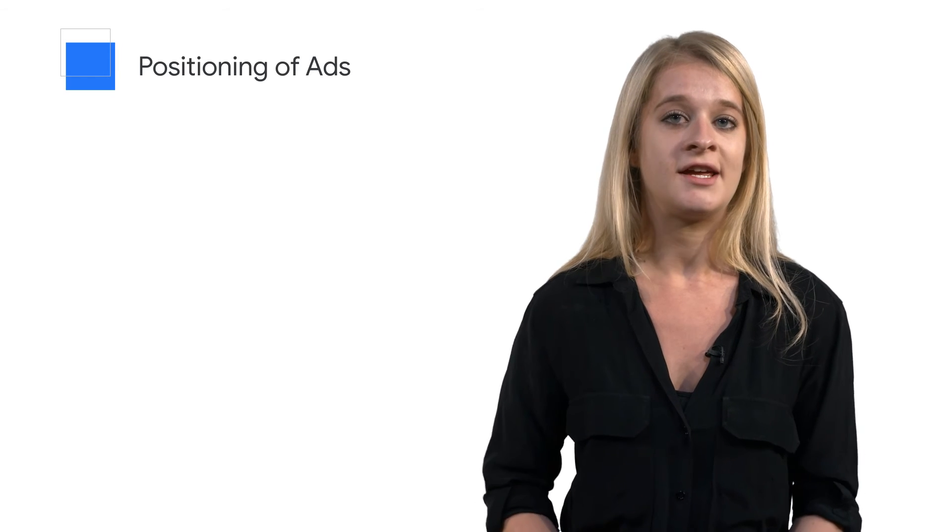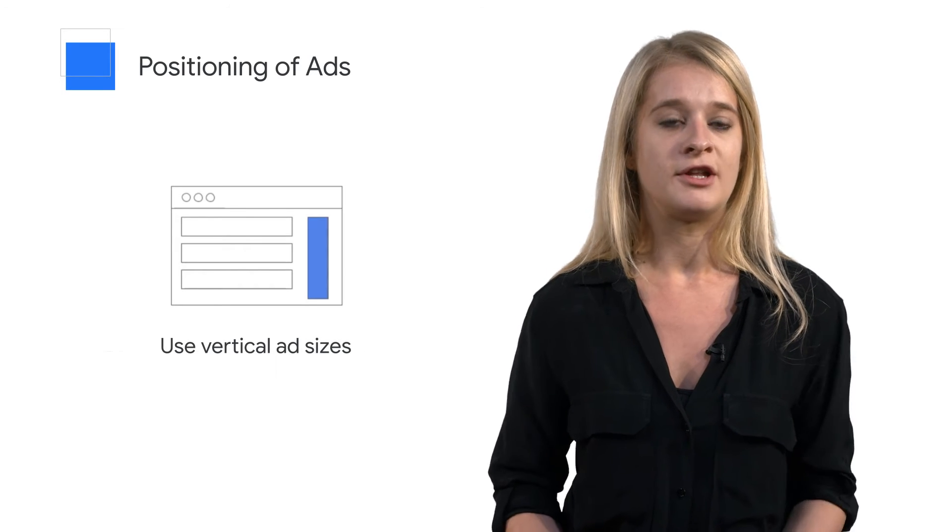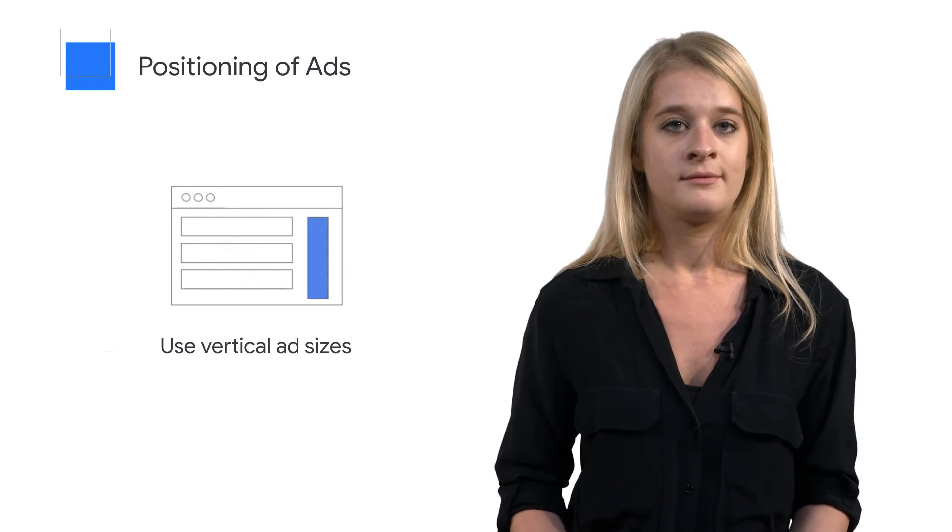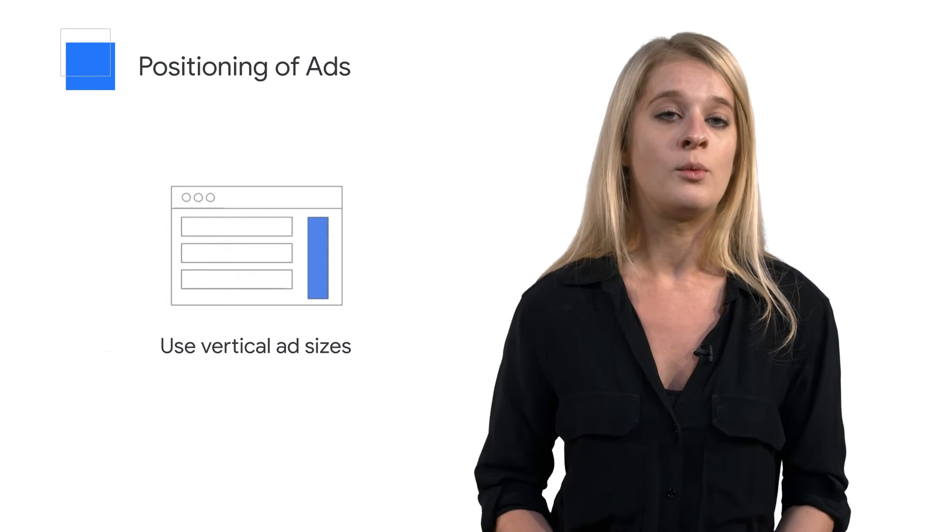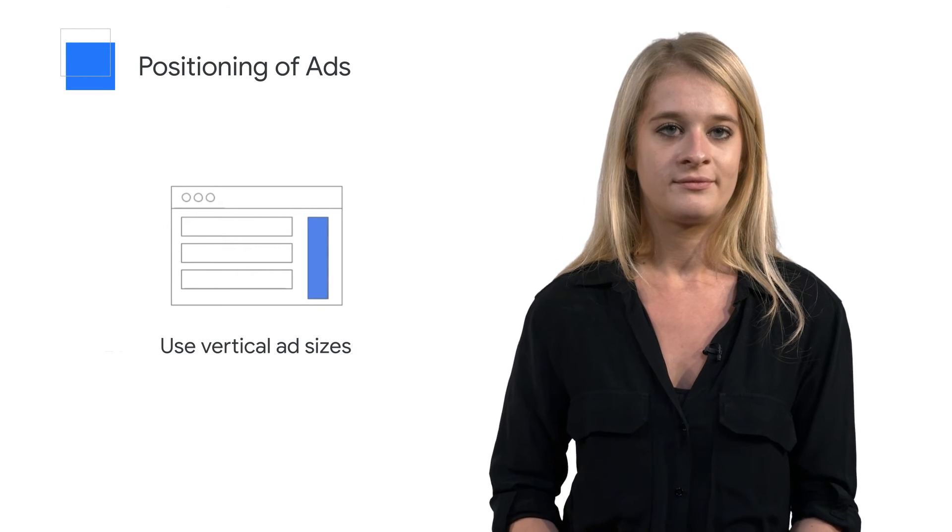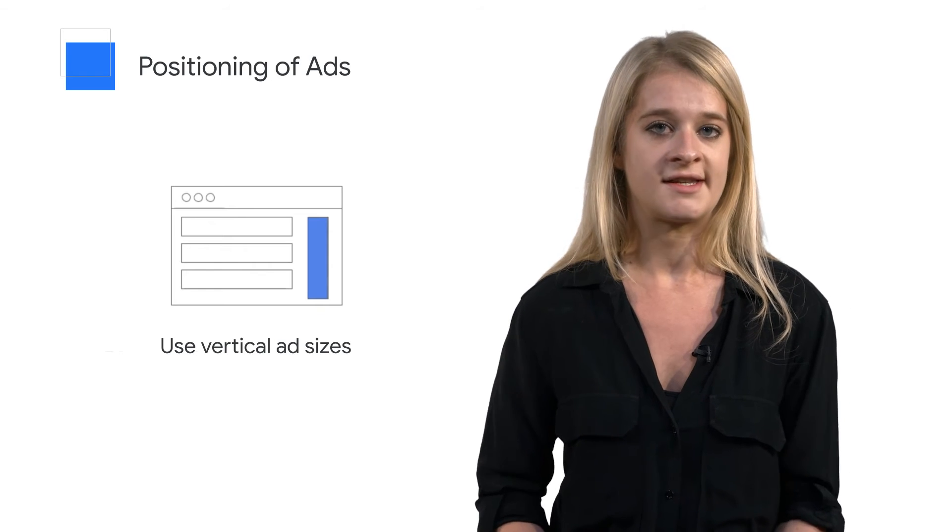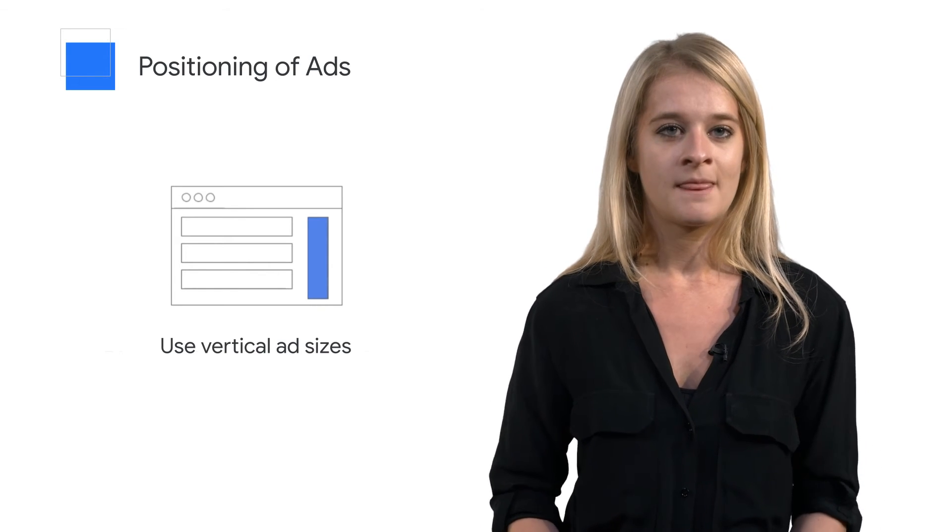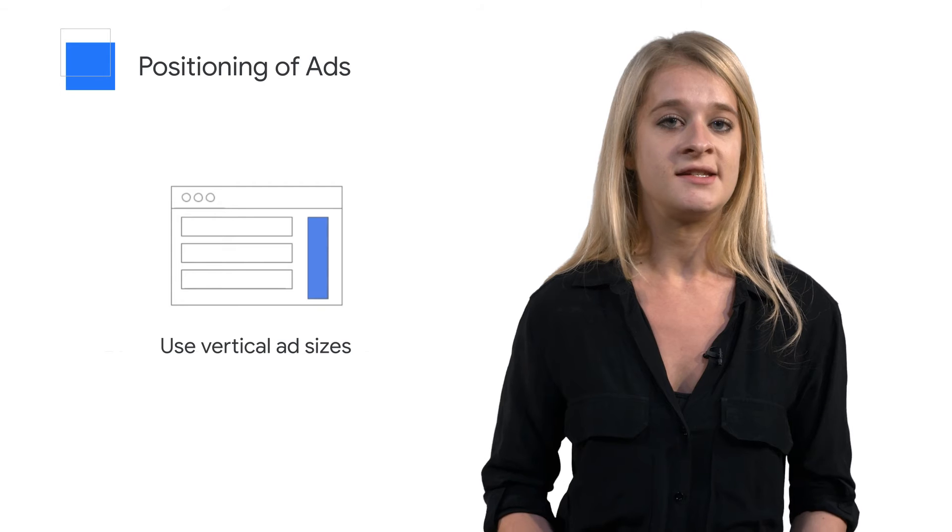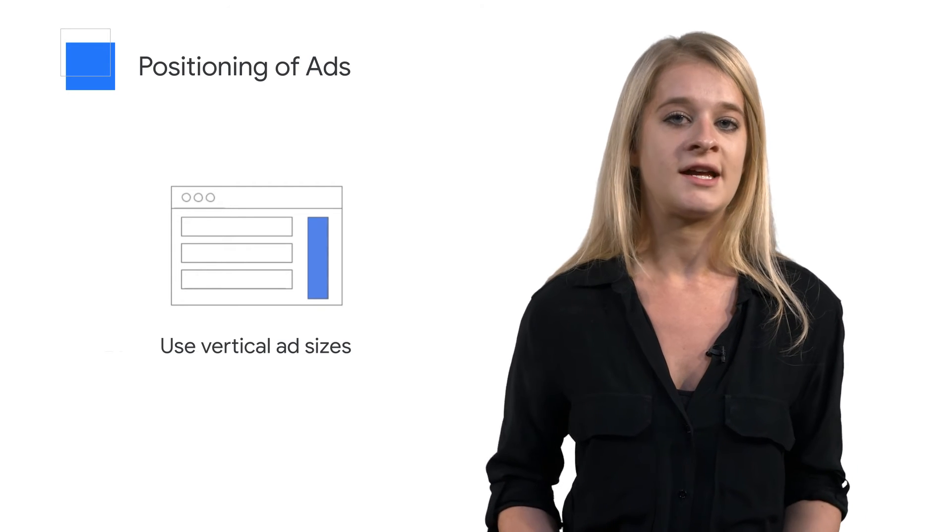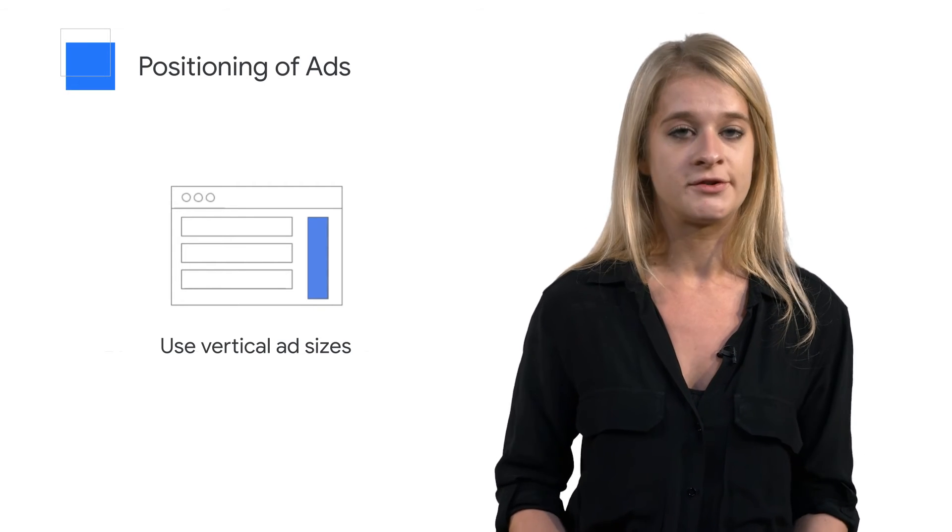The most viewable ad sizes are generally the vertical units. They stay on the screen for the longest amount of time. Good examples are 300 by 600 or 160 by 600 pixels. However, some horizontal sizes can also lead to high viewability. While taller ad units have a tendency to be more viewable, shorter units are more likely to have 50% of the pixels in view if users aren't scrolling. To find the right ad sizes for your ad slots, consider identifying where viewers are spending their time on certain pages and placing ad slots in those locations.